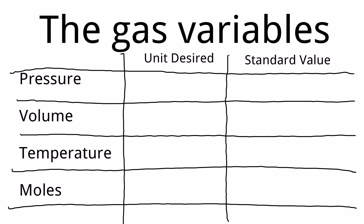For the gas laws, we tend to use a unit called atmospheres, denoted as atm. The standard value of one atm is one. When you hear "use the standard value for atm," we're also going to talk about STP — standard temperature and pressure — in a minute, where we use the value of one for atm. These are the standard values we use when considering an ideal gas.